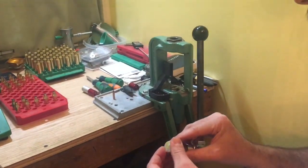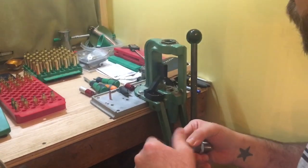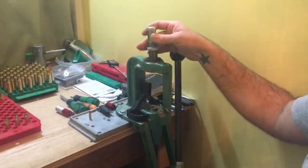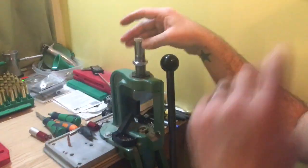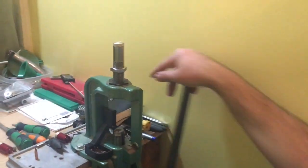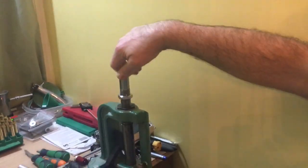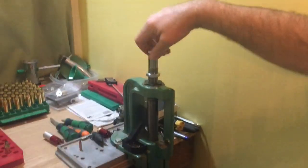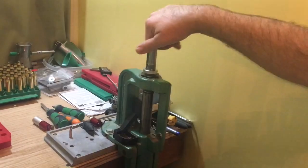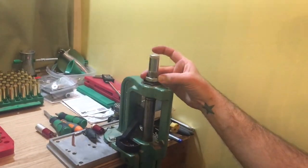I'm going to screw this back on. We're working on the RCBS press today. And I'm going to show you how to set it up. Basically, what you're going to want to do is Lee calls for you to run the ram all the way up and then screw the die down until it touches the shell holder. It should be about right there. So we've touched the shell holder right there.